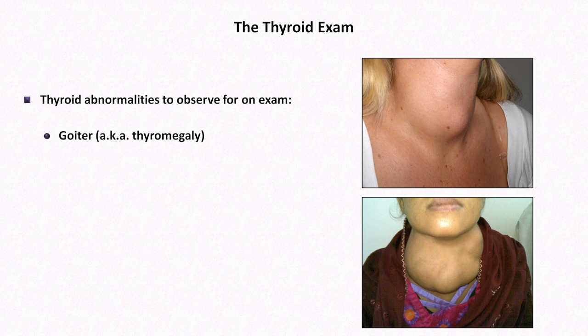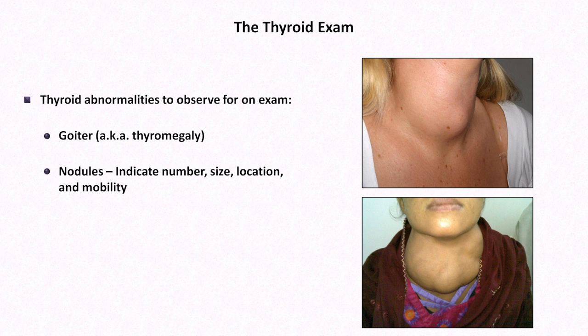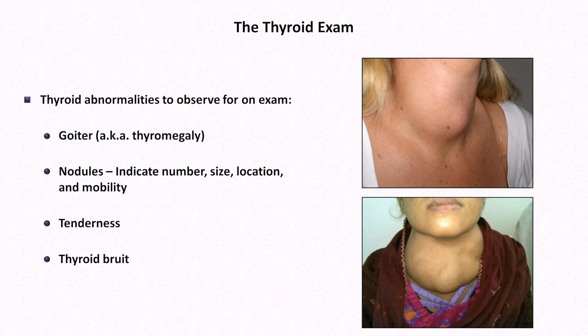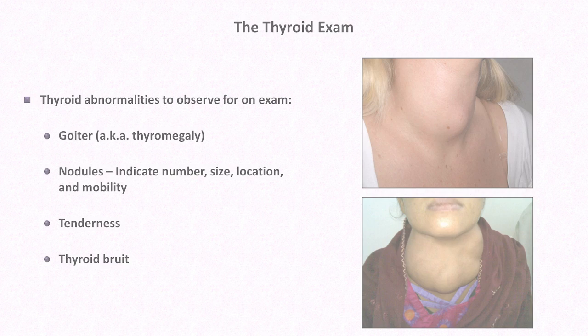Another exam finding are thyroid nodules. One should indicate the number of nodules as well as the size, location of each, and whether or not it is mobile. Tenderness of the thyroid gland can occur in the setting of severe inflammation. The last finding to check within the thyroid itself is to listen for a thyroid bruit with your stethoscope applied over the thyroid gland. Thyroid bruits typically indicate hyperthyroidism and are most commonly described in Graves disease, though they are not highly specific for that particular condition.